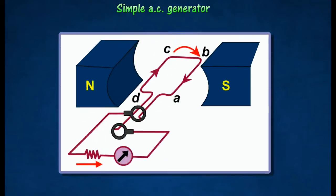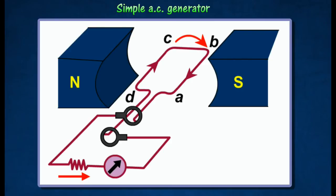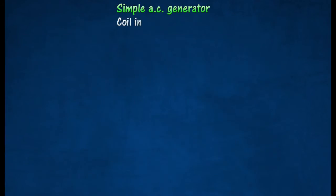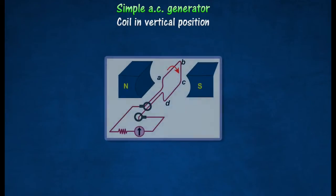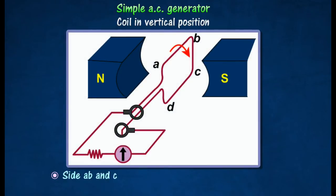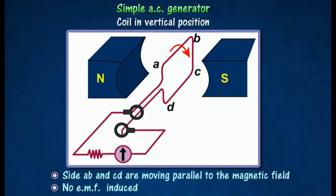Working Principle of Simple Alternating Current Generator. As the coil rotates through the vertical position, the sides AB and CD are moving parallel to the magnetic field. No electromotive force is therefore induced in the coil.